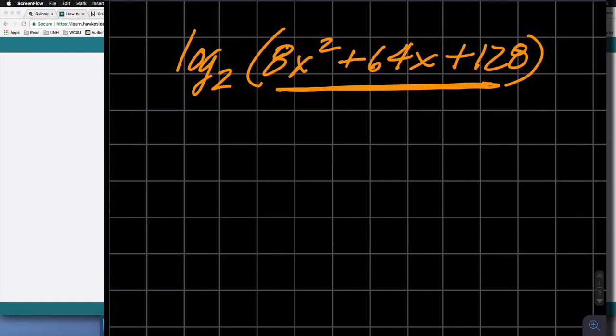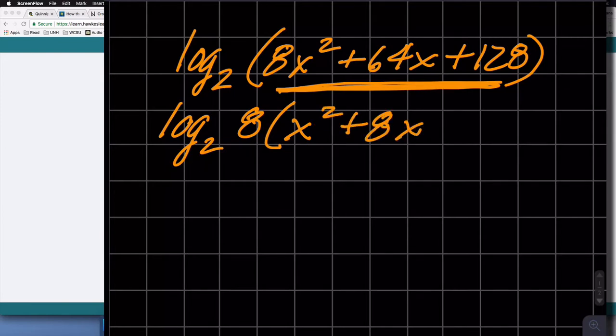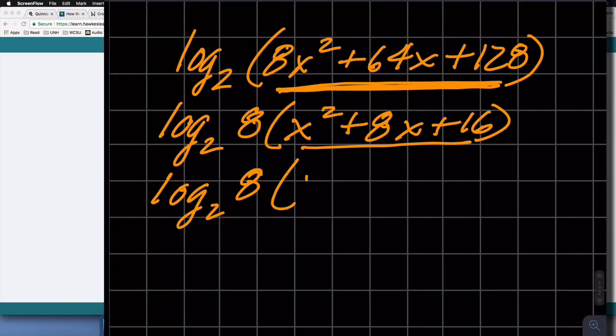But first, let's figure out what those factors are. And how do we do that? Let's factor this trinomial. So first thing I'm going to do is factor the greatest common factor, which is 8. That leaves me with x squared plus 8x plus 16 as my trinomial. Then I'm going to factor this trinomial to log base 2 of 8 times x plus 4, the quantity squared.